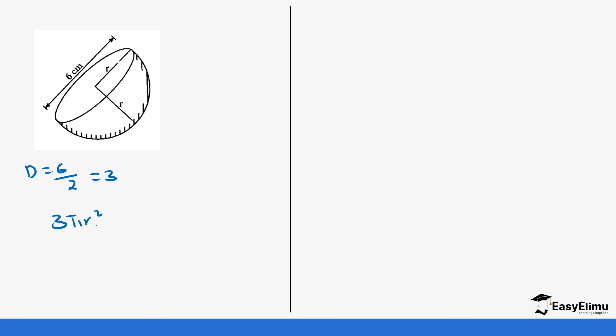For example, if you are given a hemisphere with a diameter of 6 cm, divide by 2 to get the radius: r = 3 cm. Applying the formula 3πr²: 3 × (22/7) × 3 × 3 = 594 ÷ 7 = 84.87 cm².